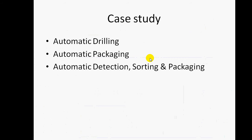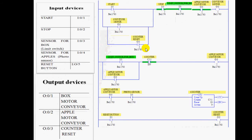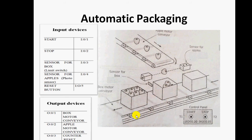Now we discuss automatic packaging. Two conveyors are provided: the first conveyor is for moving the boxes and the second conveyor is for moving apples. When you press the start button, the box conveyor starts. When the box contacts the sensor, the box conveyor stops. After that, the apple motor conveyor starts, and whenever a count of 10 apples is reached, the box conveyor starts again and moves the box to the next position.